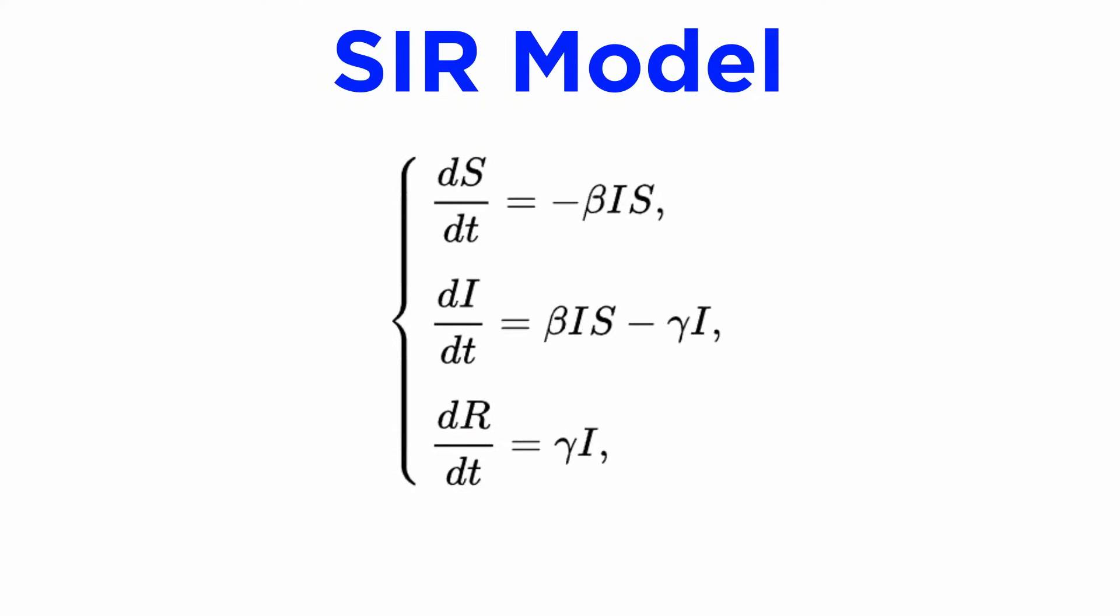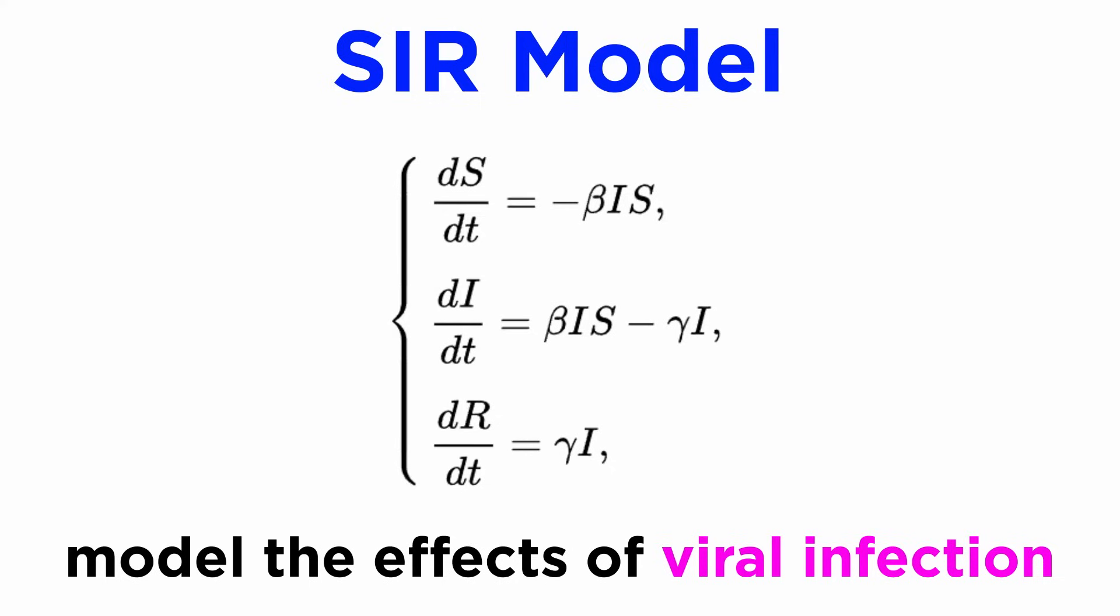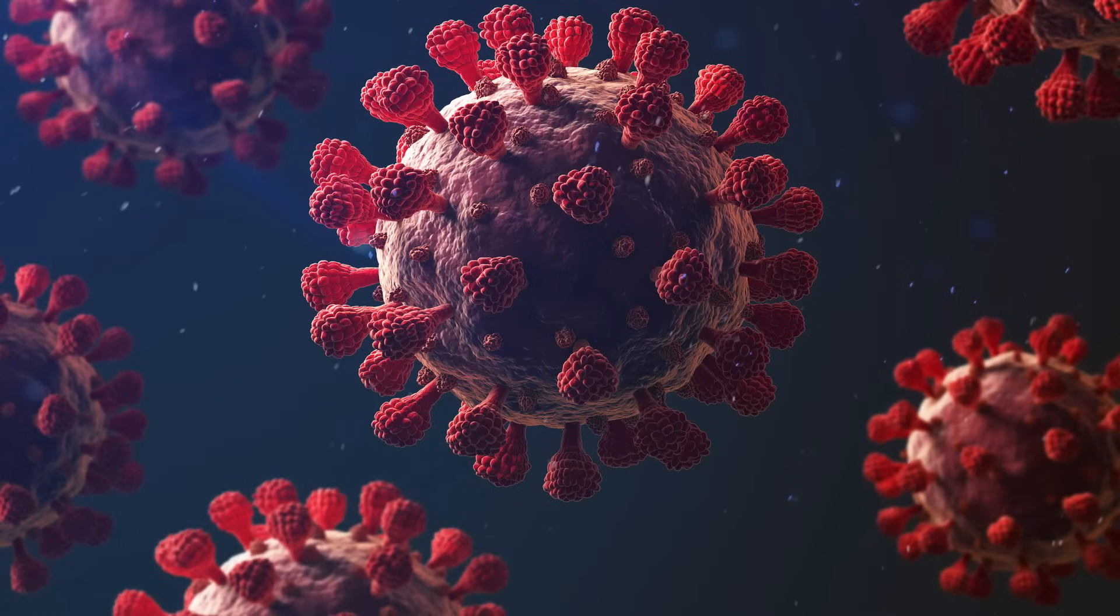In a similar vein, the SIR model can model the effect of viral infections throughout a large population as people become ill, recovered, or vaccinated, and it's rather self-explanatory how these kinds of calculations are very important.